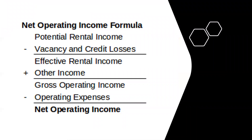Now, first let's talk about net operating income — or NOI — a little bit more. It is the income after being reduced by credit loss, vacancy, and operating expenses. Gross operating income: you take the gross scheduled income, which is the property's annual income if all units were rented out and all of the rent was actually collected, then subtract an allowance for vacancy and credit loss. The result is gross operating income.